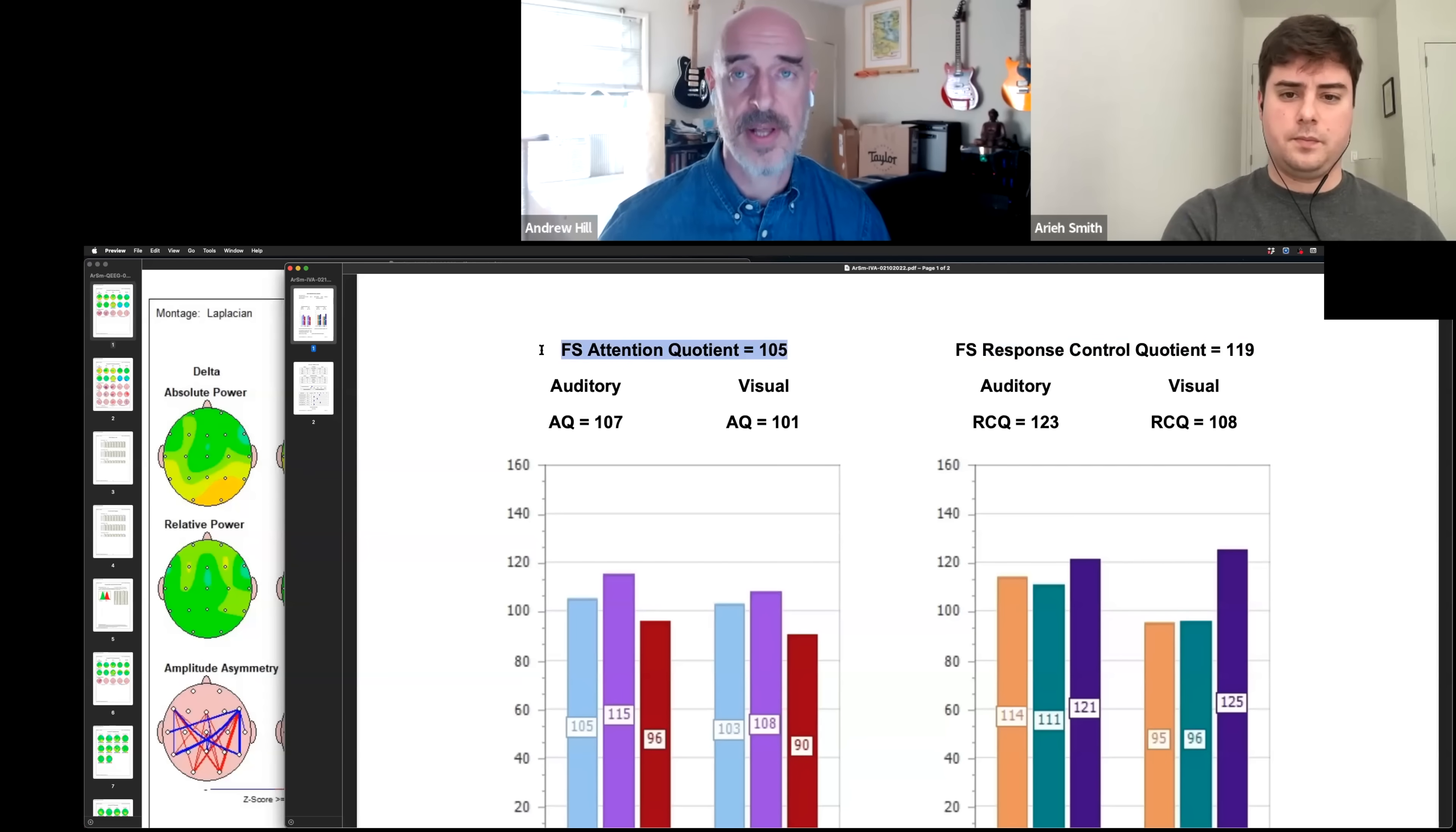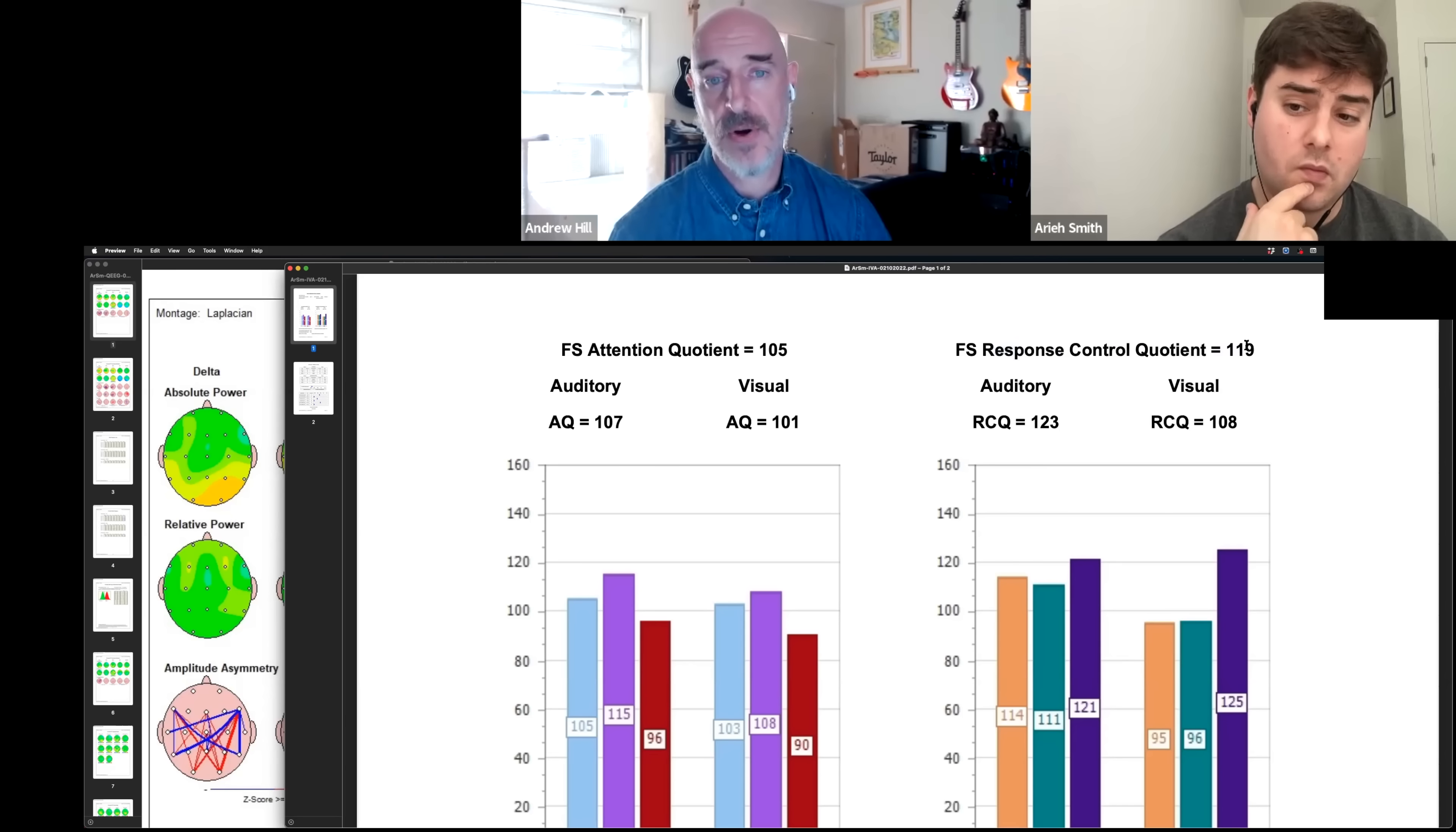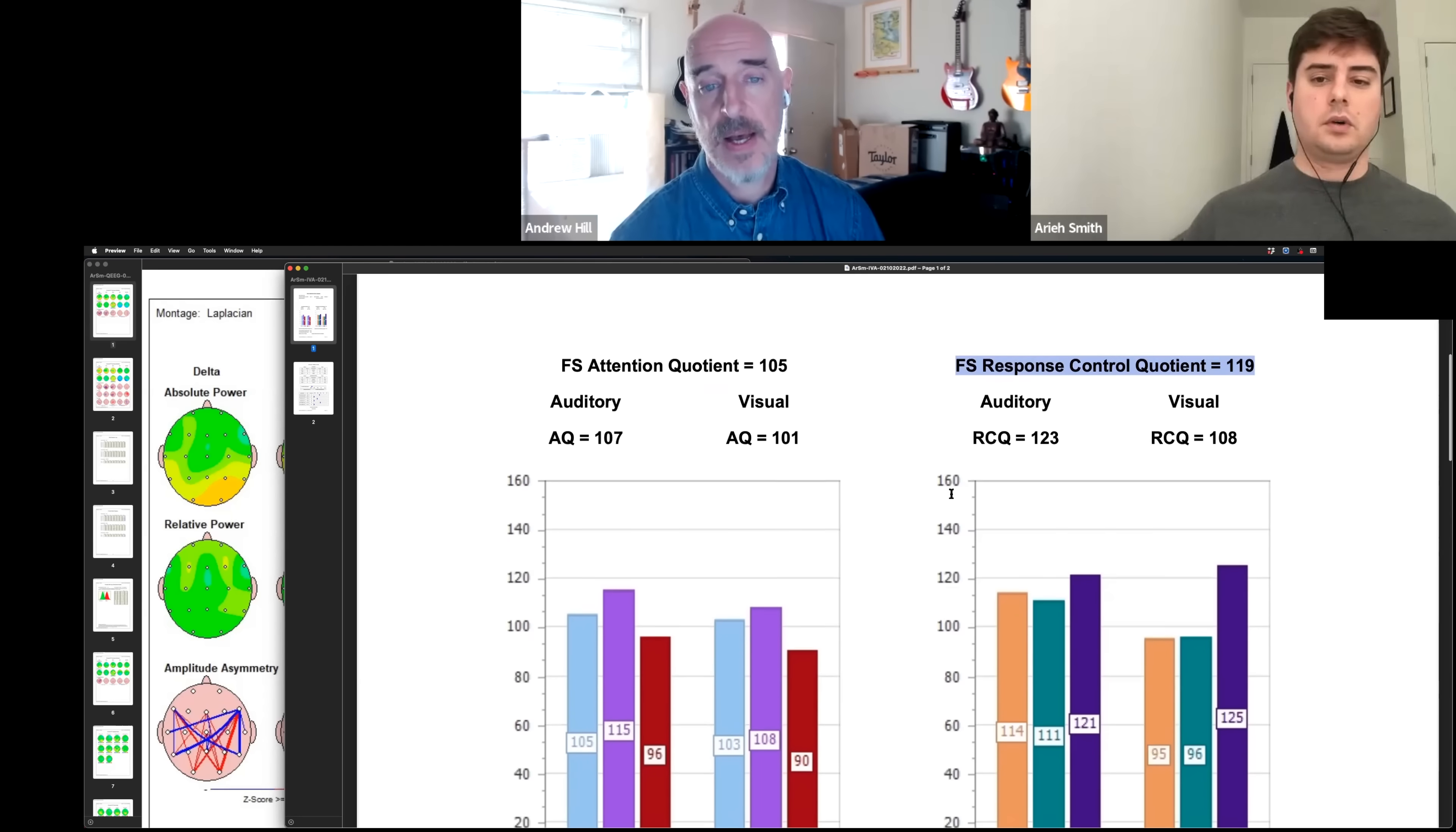Now, attention is how well you can click successfully when that one popped up that you were supposed to hit. The response control is how well you can not click when the distractor, the two popped up. So you're well above average for self-control, essentially. You're not reactive or impulsive. I have good self-control, yeah. You do, statistically. You're way above average.